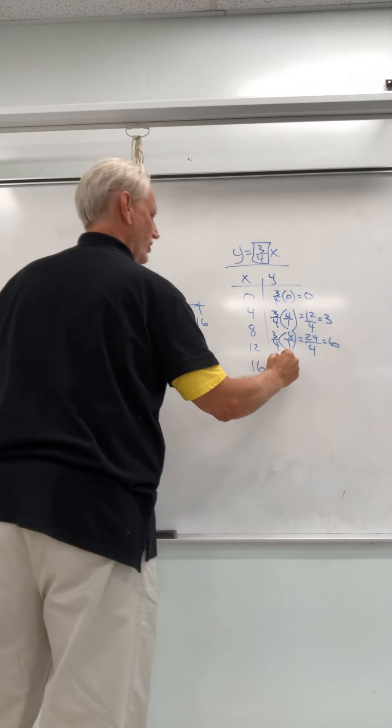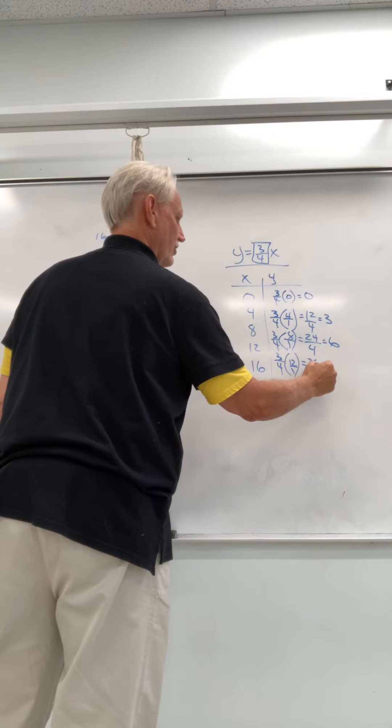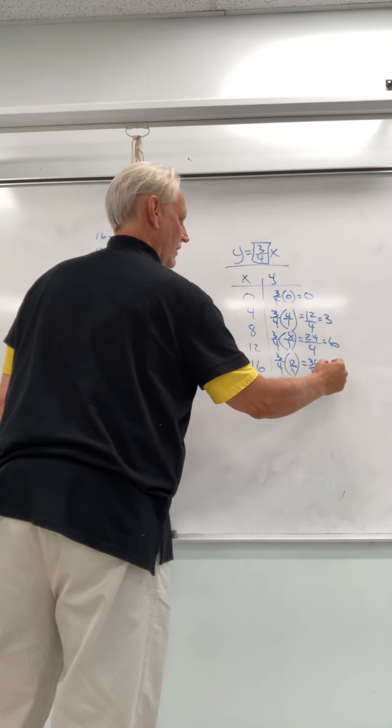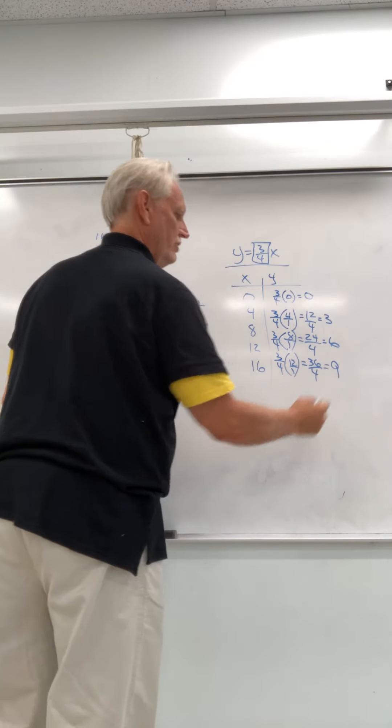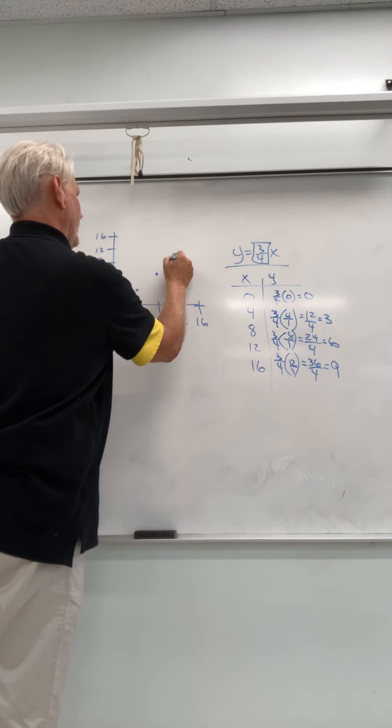Then we have 3 fourths times 12 over 1. That's going to be 36 over 4. Simplified, it's going to give you 9. So my next point is over 12 and up to 9.